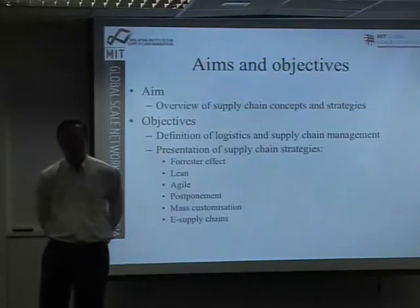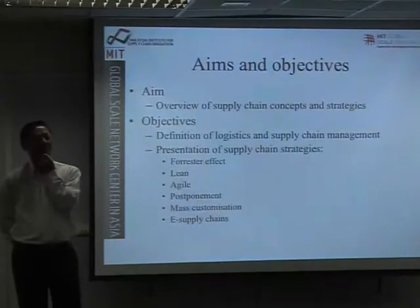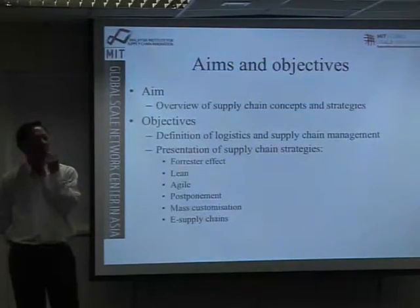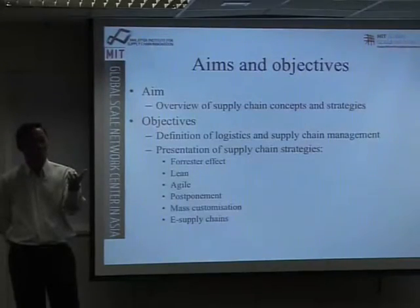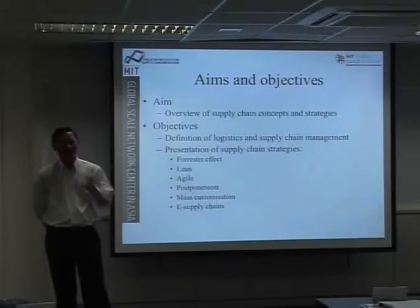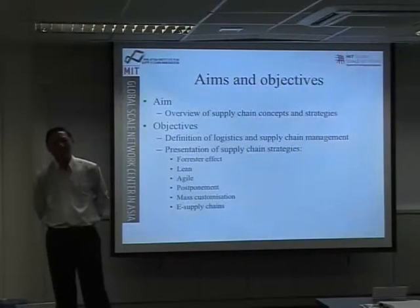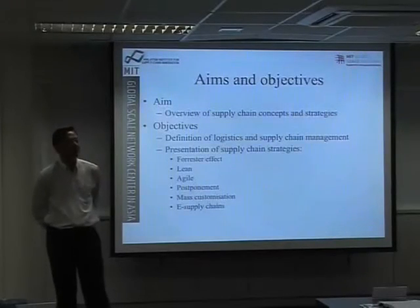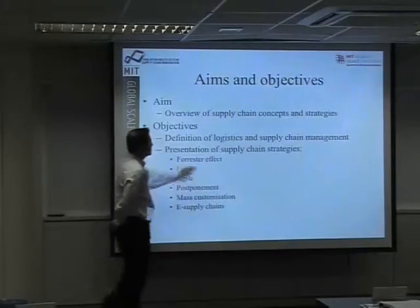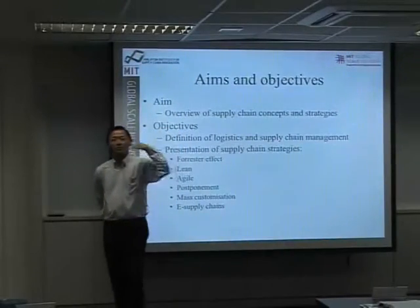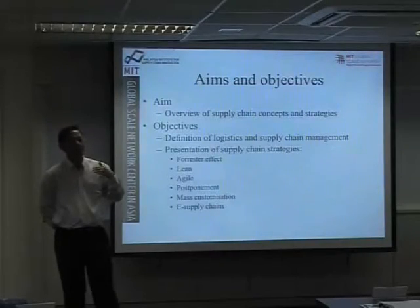Going back to the first lecture on supply chain introduction: supply chain management involves three flows — material flow, information flow, and financial flow. In logistics management, the entire focus is only on material flow — the movement of products. It doesn't really address financial flow and information flow. That is one of the key differences. Another key difference is that supply chain management is more strategic than logistics management.